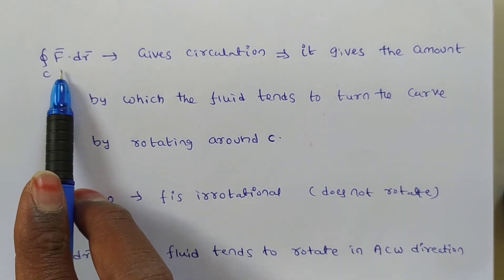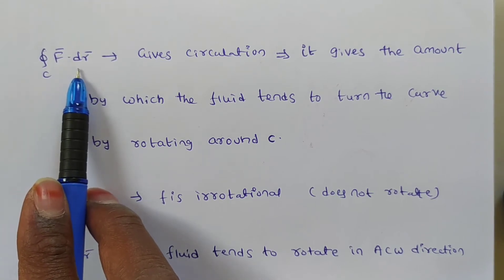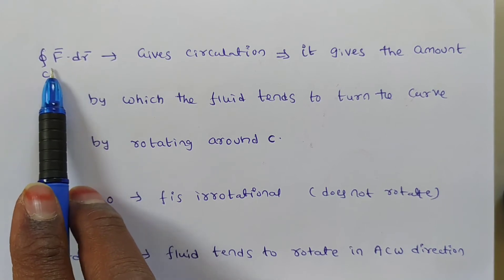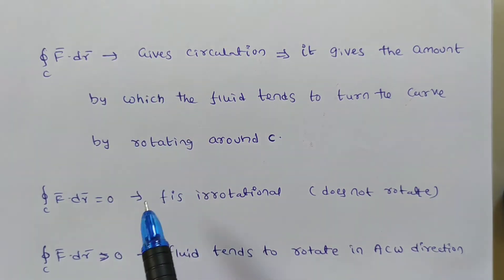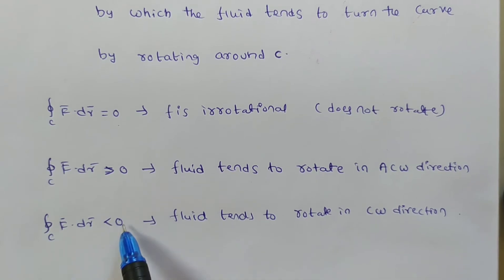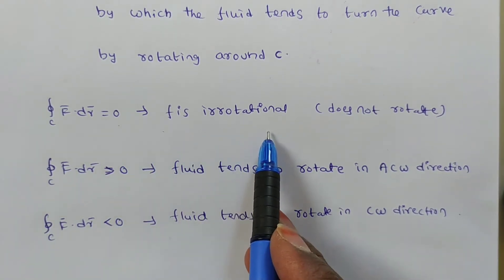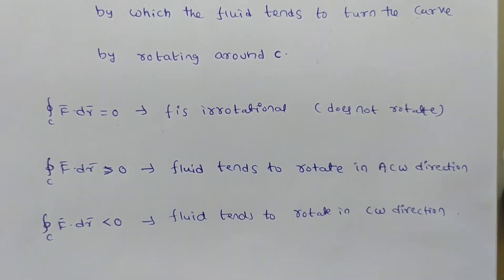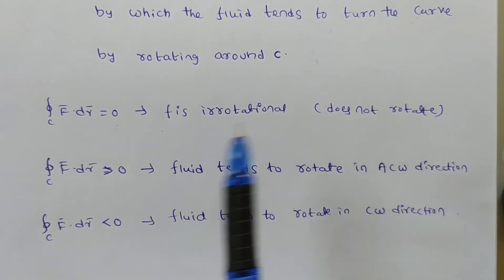Now, f̄ · dr̄ gives a result that is either vector or scalar. Since f̄ is a vector and dr̄ is a vector, their dot product gives a scalar. That scalar may be 0, greater than 0, or less than 0. If the value is 0, then f is irrotational — meaning the fluid does not rotate.